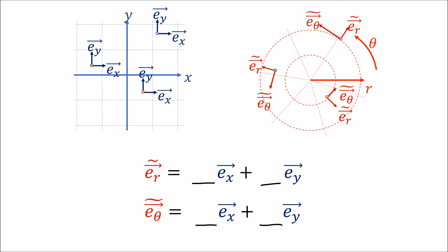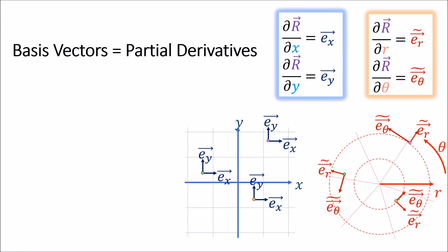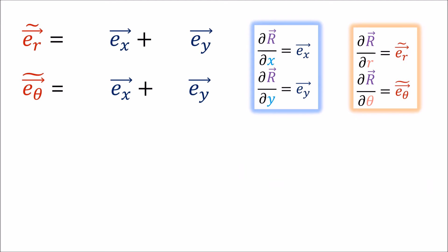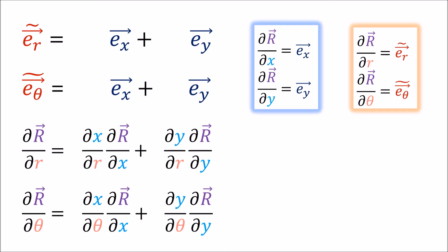But it turns out that inventing the forward transform for every point in space is extremely easy, because of what we did in the last video, where we made basis vectors equivalent to partial derivatives of a position vector capital R. So instead of asking how to change between the basis vectors, we can ask how to change between these partial derivatives. And the answer to that is just the multivariable chain rule — the coefficients used in the transform are just the partial derivatives between the coordinate variables.